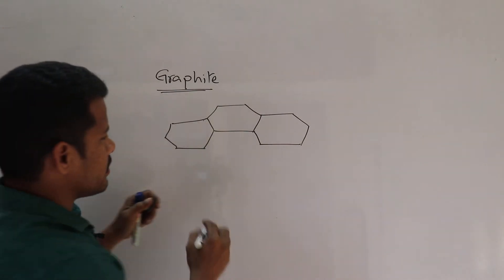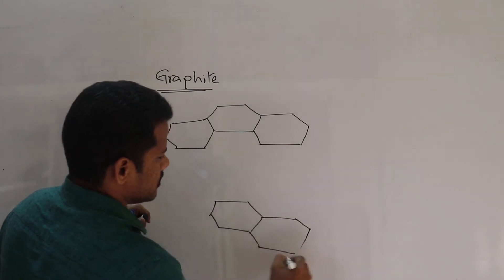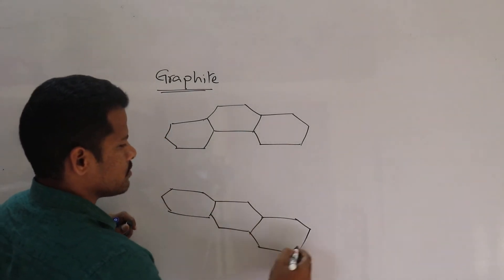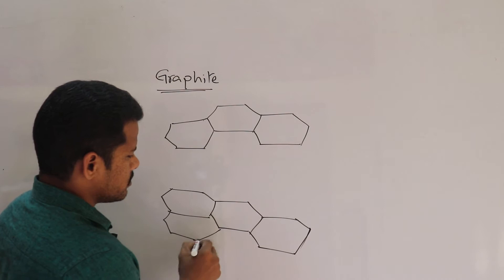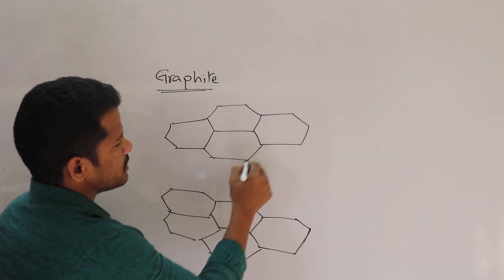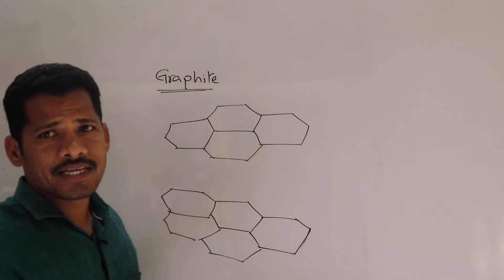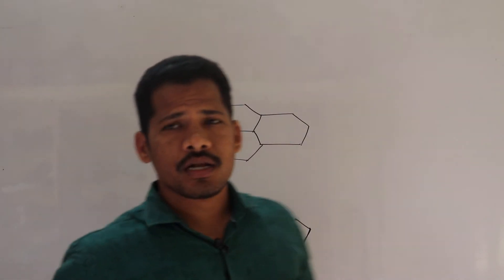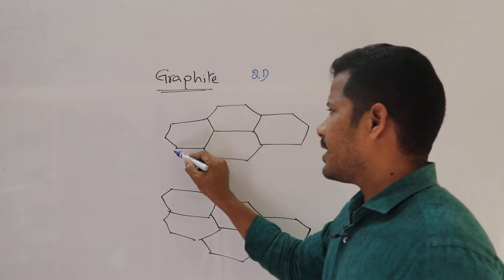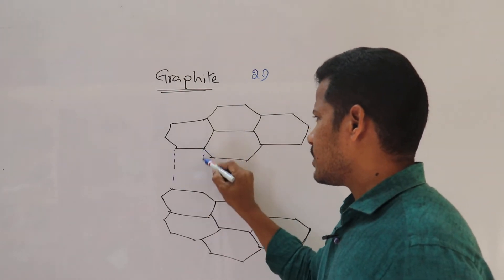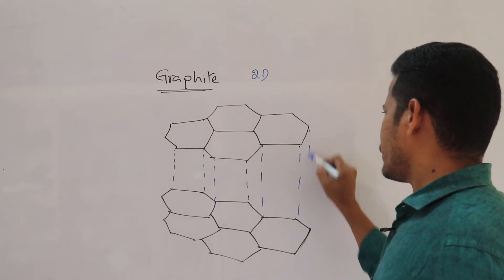Looking at the structure of graphite — this is a hexagonal ring. It forms hexagonal rings like this. This is considered as one layer, and this is a second layer. From this diagram we observe that graphite exists in the form of layers — it is a two-dimensional layer structure. Between the layers, weak van der Waals forces exist.